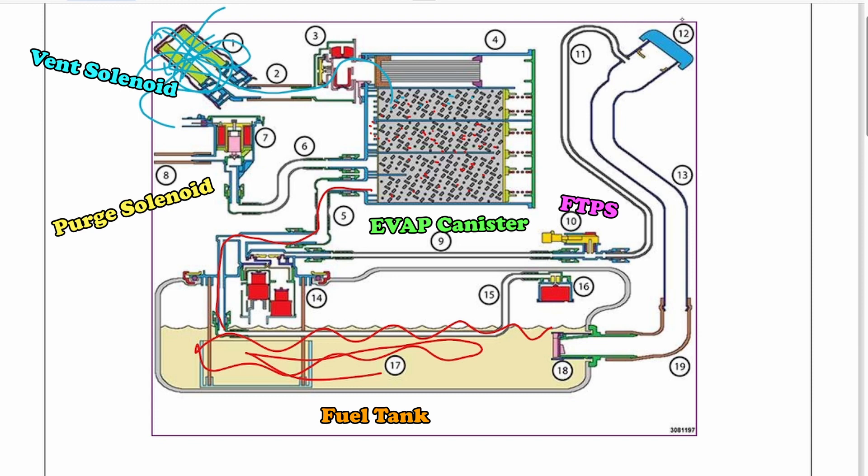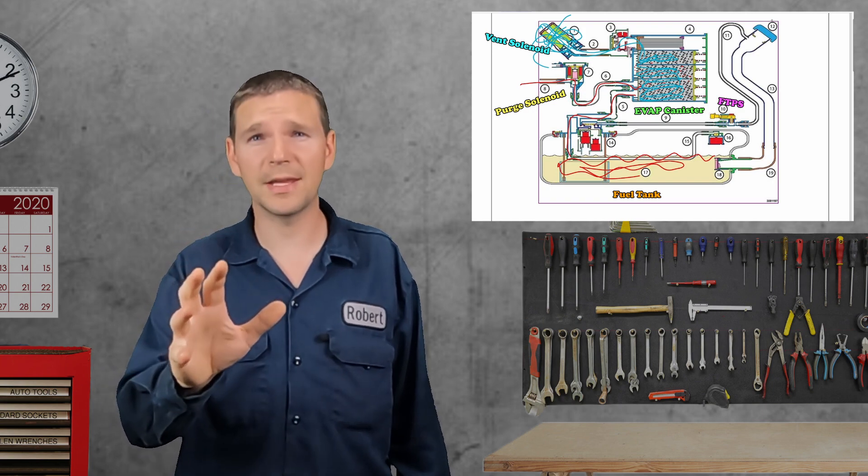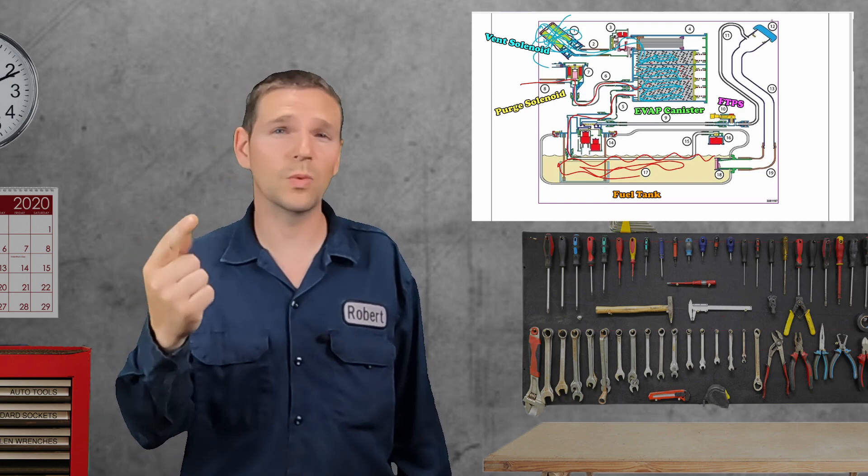When the purge is opened, all those hydrocarbons go out to be burned into our intake manifold. Fresh air is drawn back into the vent, cleaning out our filter. Now that we know how it operates on a schematic, let's take a field trip and see what it looks like in real life.